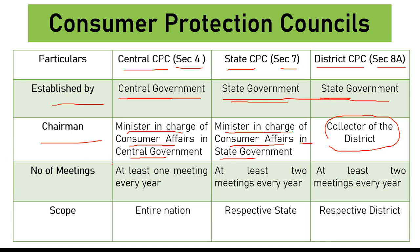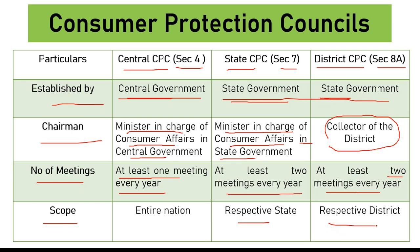Regarding meetings: the Central Council holds at least one meeting every year, while the State Council and District Council each hold at least two meetings every year. The scope of the Central Consumer Protection Council is for the entire nation, the State Consumer Protection Council is for the respective state, and the District Consumer Protection Council is for the respective district.